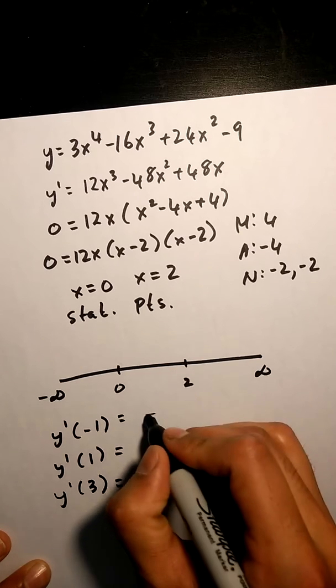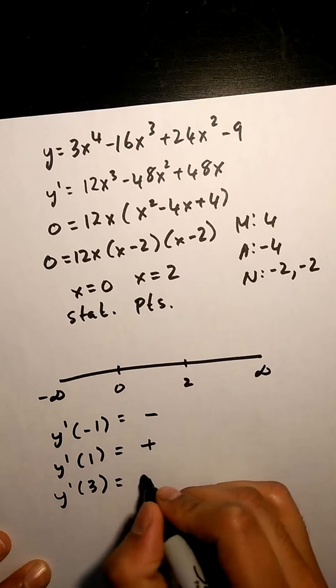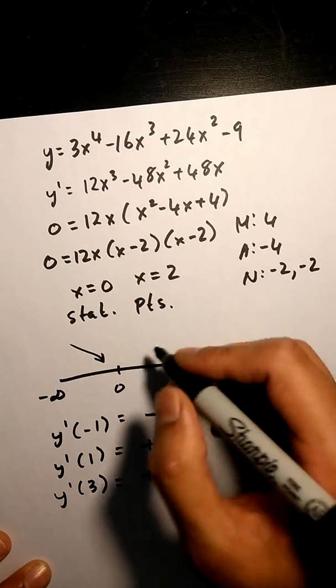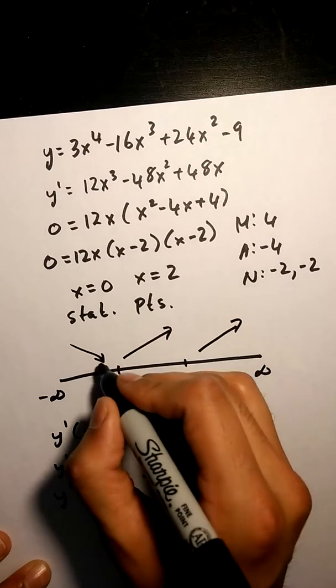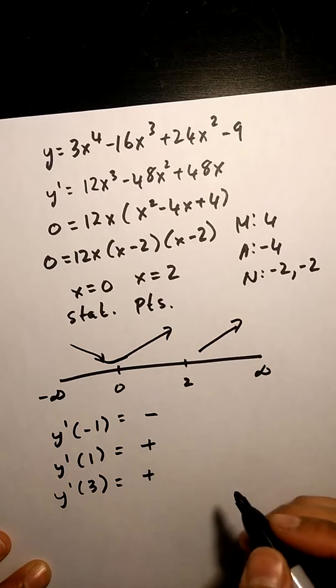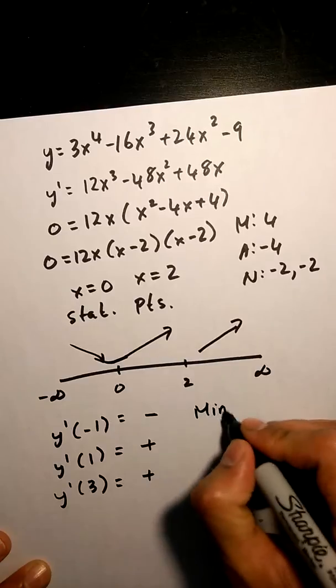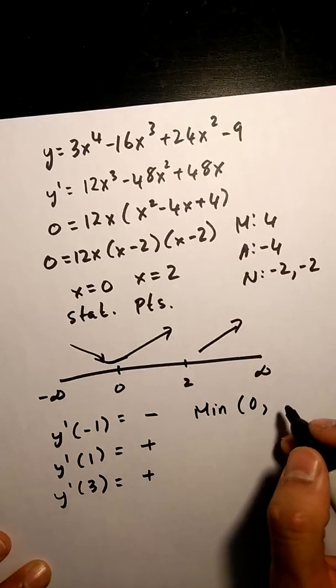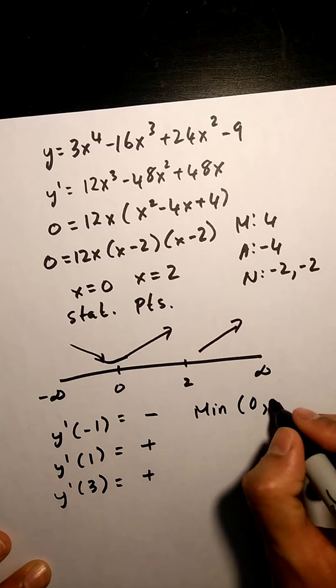In this case I get a negative, get a positive, get a positive, and it's decreasing, increasing and increasing. And I know that there's a minimum at x equals zero. Put this in my equation and I get negative 9.